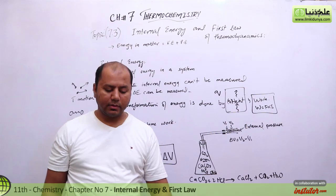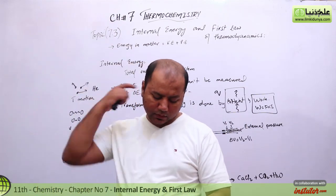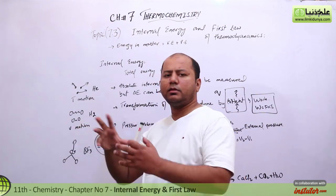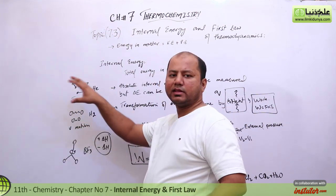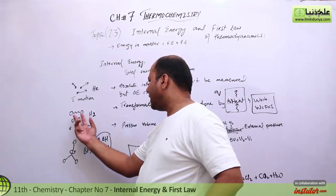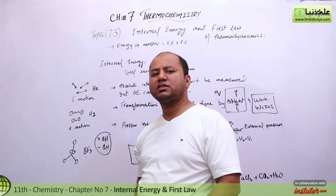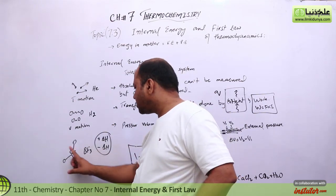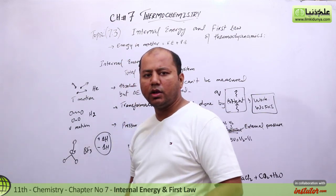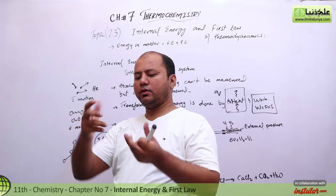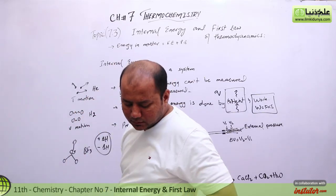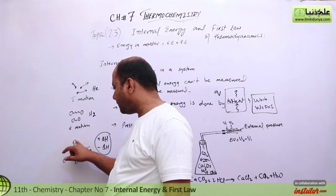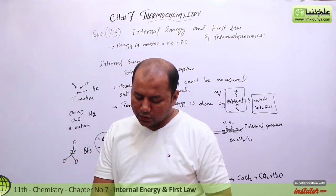Work equals negative pressure times delta V. Now, the internal energy of particles includes energy in motion — that is, translational motion, vibratory motion, and rotational motion. For example, BF3 (boron trifluoride), a triatomic molecule, rotates around its axis and also contains rotational energy.